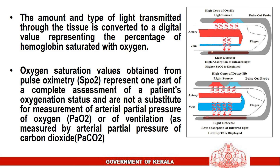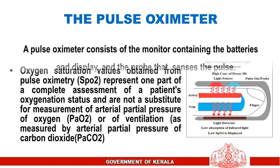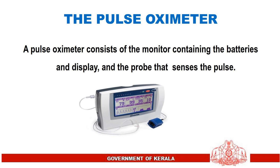Oxygen saturation values obtained from pulse oximetry represent one part of a complete assessment of a patient's oxygenation status and are not a substitute for measurement of arterial partial pressure of oxygen, or of ventilation as measured by arterial partial pressure of carbon dioxide.